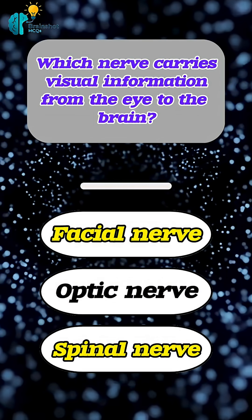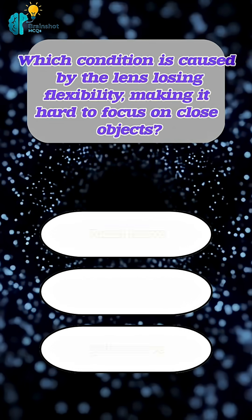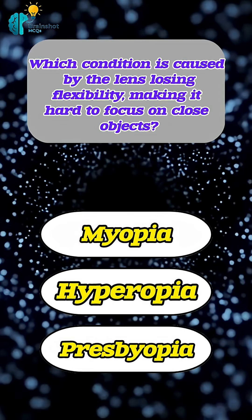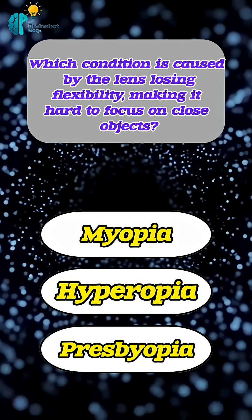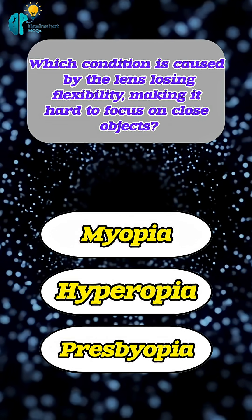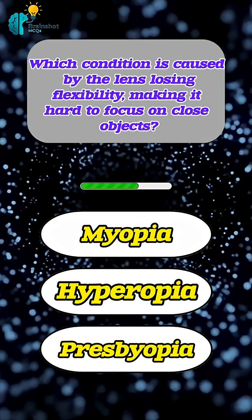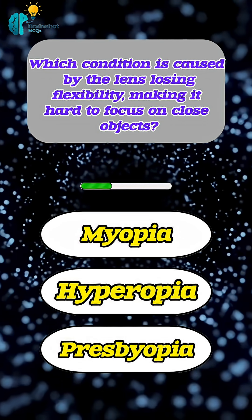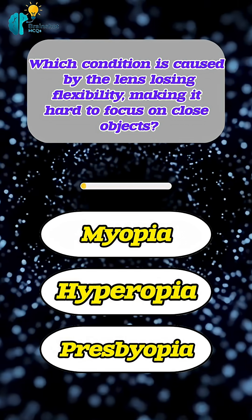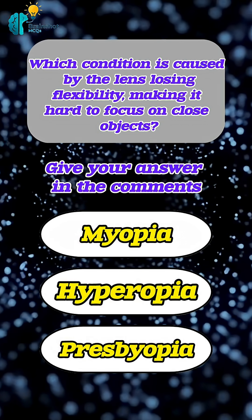Correct answer: optic nerve. Which condition is caused by the lens losing flexibility, making it hard to focus on close objects? Give your answer in the comments.